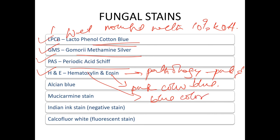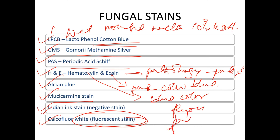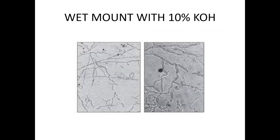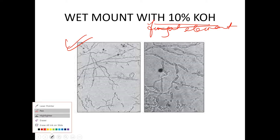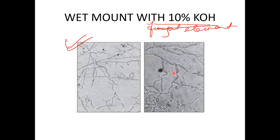Additional stains include Alcian Blue, Mucicarmine stain, Indian Ink stain, and Calcofluor White — a fluorescent stain. In wet mount with 10% potassium hydroxide, you can see fungal elements directly.